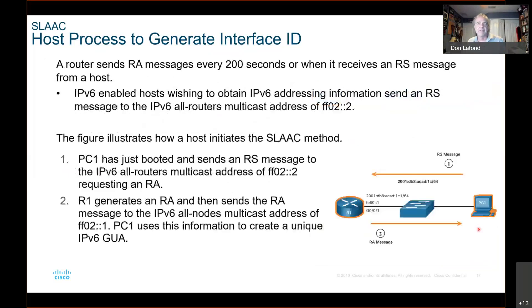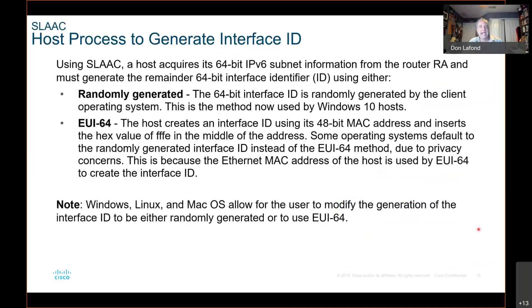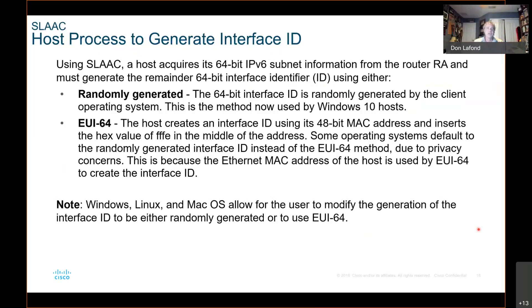But if you see FFFE, now you actually know the MAC address of the device. You take the 24 bits on the left of FFFE and the 24 bits on the right of FFFE and put those two together, remove the FFFE, and now you have the MAC address — which could be a security issue. That's why we don't use EUI-64 anymore. Some operating systems default to randomly generated interface IDs instead of EUI-64 due to privacy concerns.